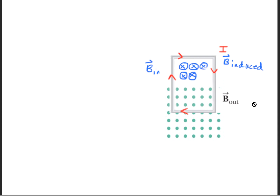An induced magnetic field has to form directed into the page. We need to figure out which way the current has to move so that inside the square loop of wire the magnetic field is directed into the page. Using your right-hand rule, take your thumb and run it throughout the square loop of wire in a clockwise direction — you'll find that your fingers curl into the page. That proves the current needs to run in a clockwise direction.